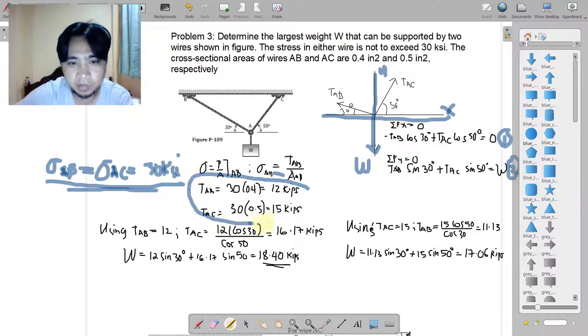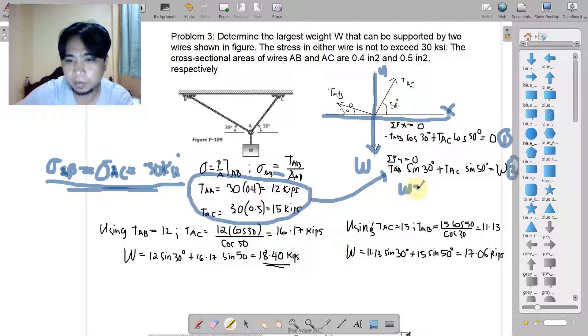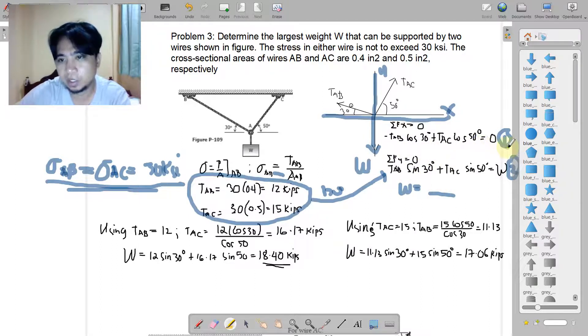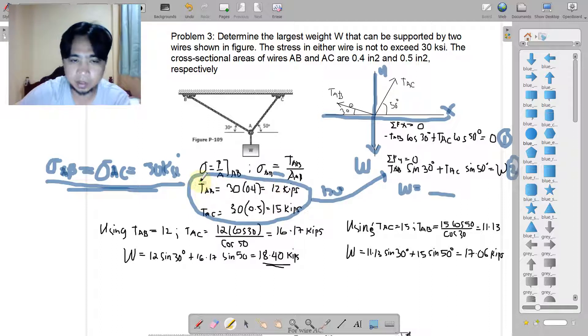You might say this problem is already finished because we have two forces determined here, and all we have to do is substitute it in equation 2 and come up with W. I suggest that we do not do this scheme because it might be that if we have derived W here, we did not satisfy equation 1. This option is actually an erroneous or wrong option because we disregarded equation 1.